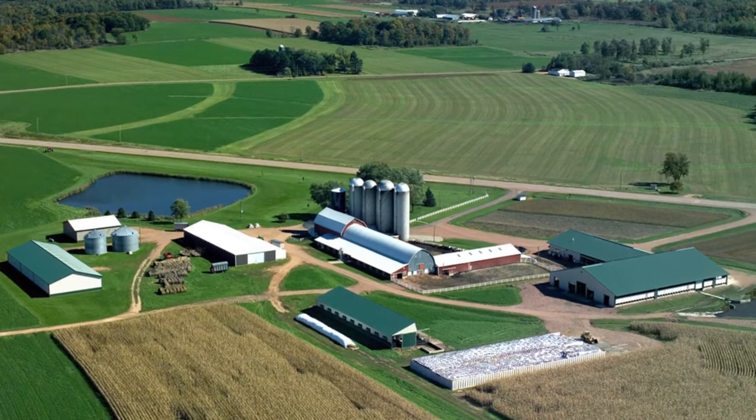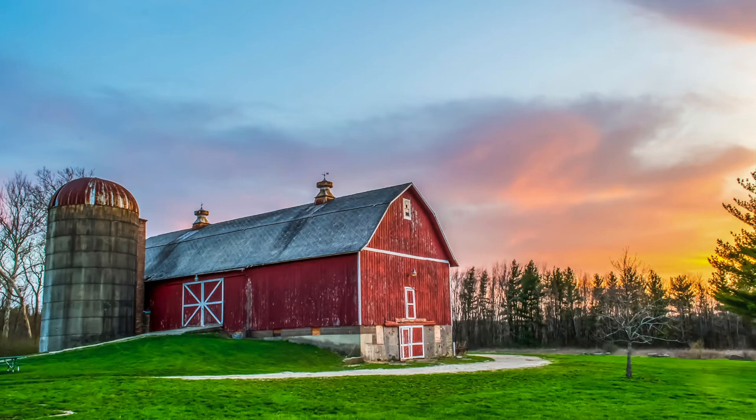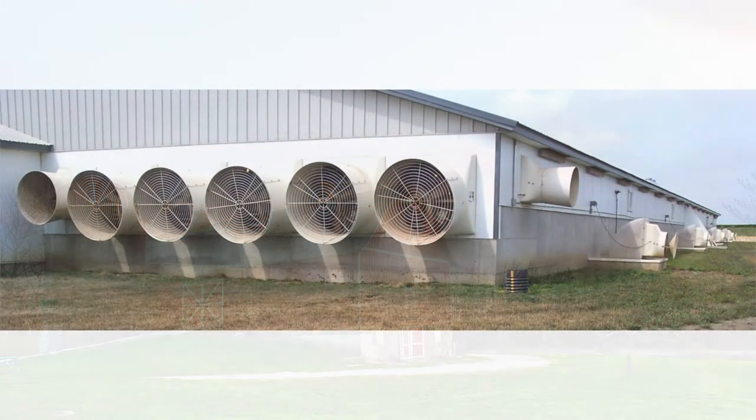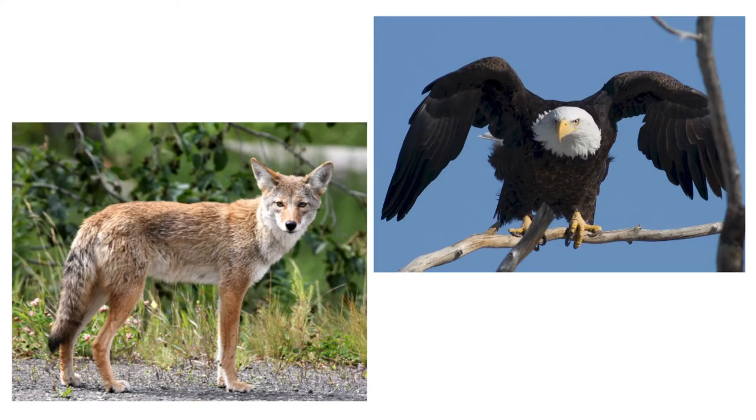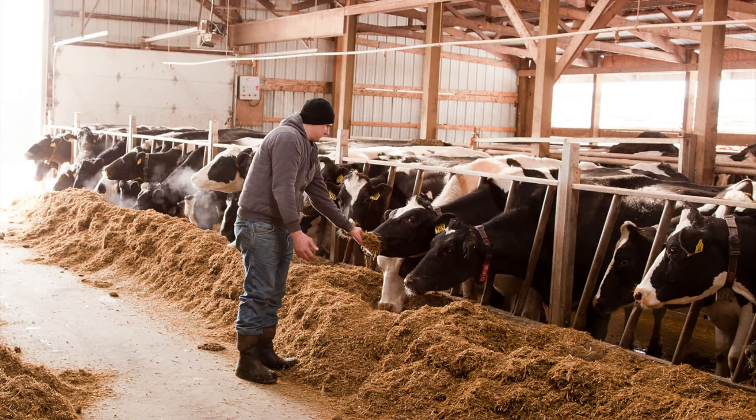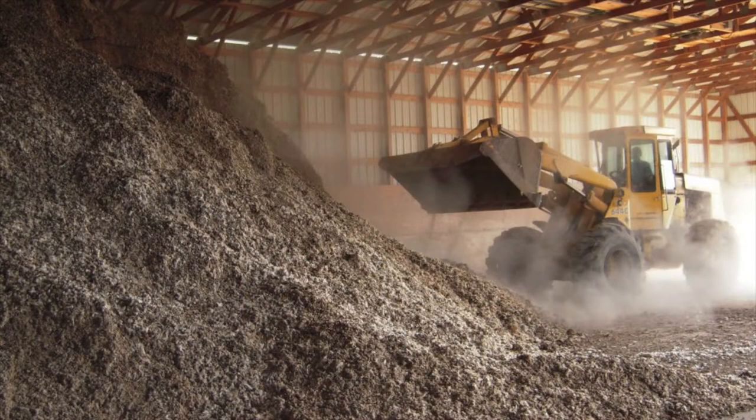Animal housing on modern day farms has come a long way from the old barns of the past. Today's housing systems are designed to provide a clean, dry, and comfortable environment for cattle, pigs, and poultry, while also protecting them from predators and disease. They also enhance farmers' ability to feed and handle their animals as well as manage manure.